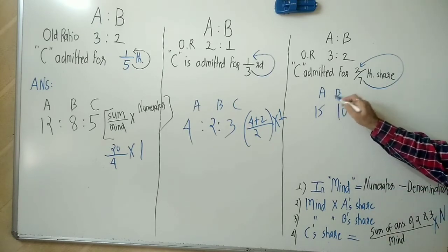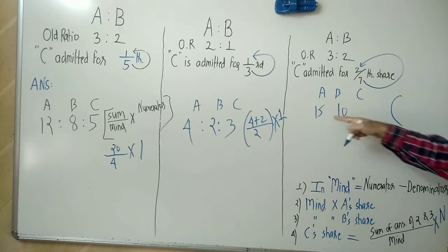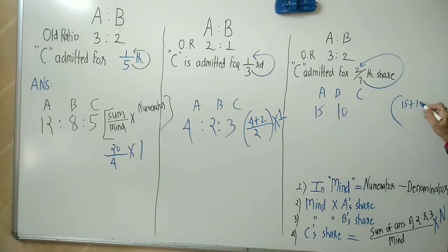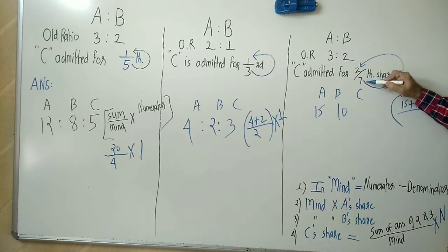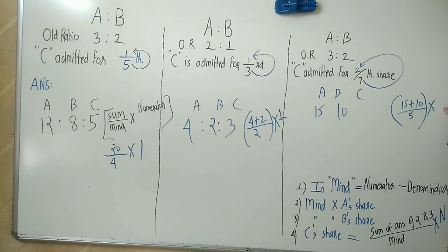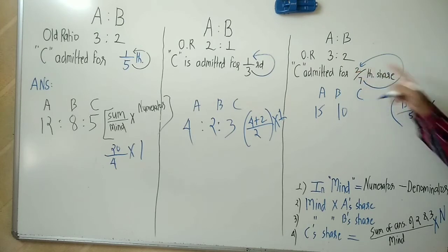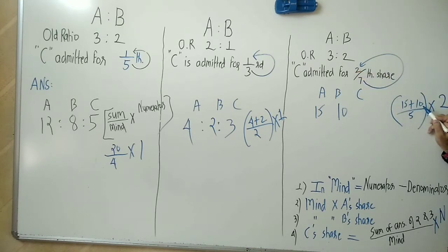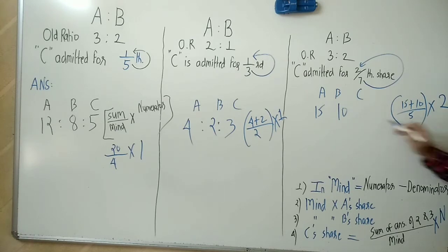This is A's share, this is B's share. For C: add up these two, divide by whatever is in your mind. 7 minus 2 = 5, times numerator 2. So: 15 + 10 = 25, divided by 5 = 5, times 2 = 10. That's C's share.